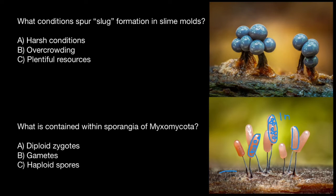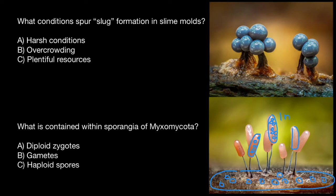Here is the body of the slime mold. In the body we can find multiple nuclei, so the whole slime mold is acellular — or we can also say it represents a single cell — but with multiple nuclei. And these nuclei are diploid, so we say 2N.